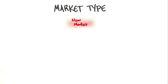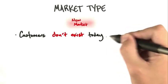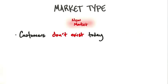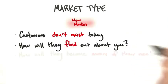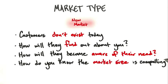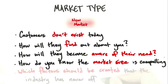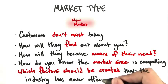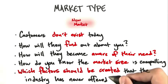The next market type is a new market. Customers don't exist today. The real questions are: if they don't exist, how will anybody find out about you, and how will they even become aware that they need to be in this new market? And by the way, how do you know the market size of something that doesn't even exist today? The market size is zero. And what factors should you create that the industry has never offered?